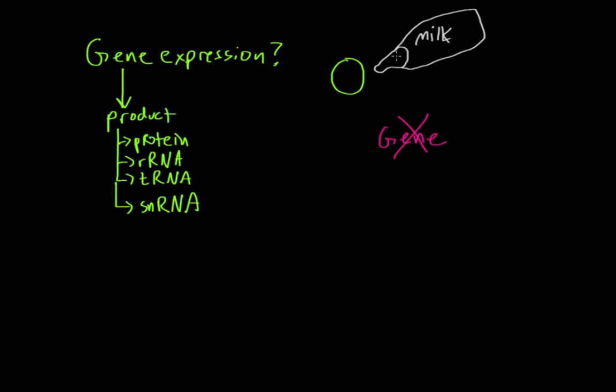Well, if we knock it out and then we give milk to the cell, and if it's still able to digest the milk, then we know that this gene didn't really have much to do with digestion of milk. But if we knock it out and the cell is no longer able to digest the milk, then we know that this gene, hey, it had something to do with the digestion of milk.